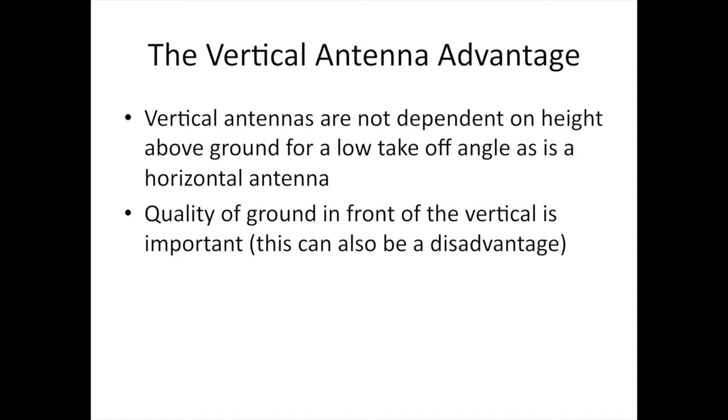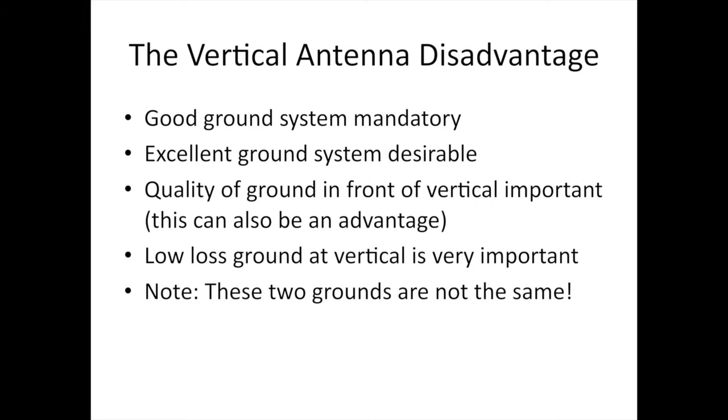With a vertical antenna you have some advantages. Verticals are not dependent on height above ground for a low takeoff angle like a horizontal antenna. The quality of ground in front of the vertical is important. This can also be a disadvantage. Disadvantages of a vertical are that you need a good ground system. That's mandatory. An excellent ground system is desirable. The quality of the ground in front of the vertical is important. Low loss ground at the vertical is very important. Note, the two grounds are not the same.